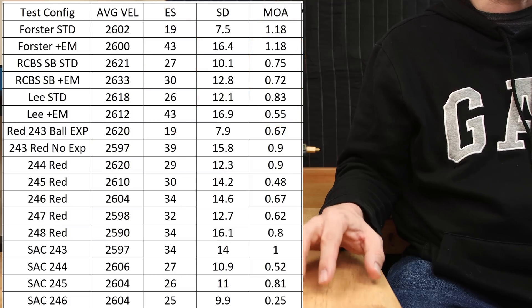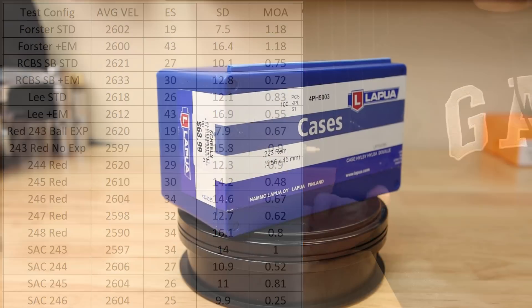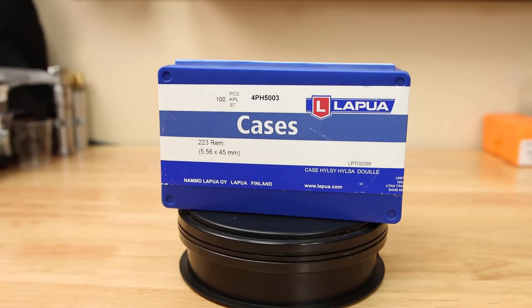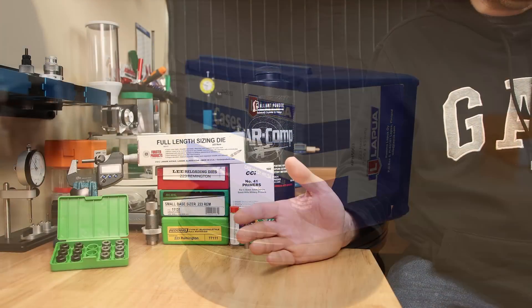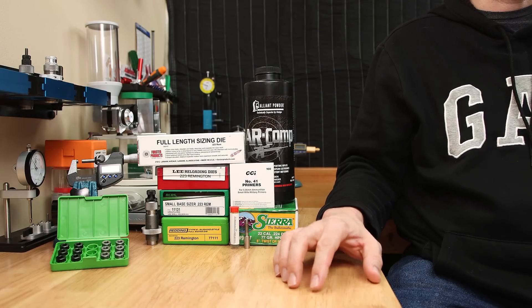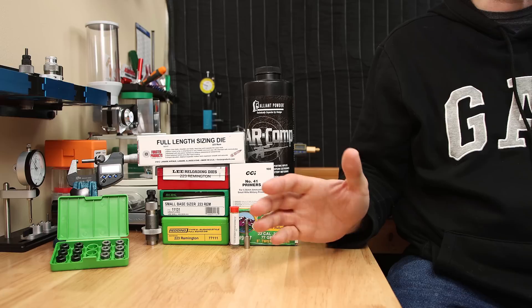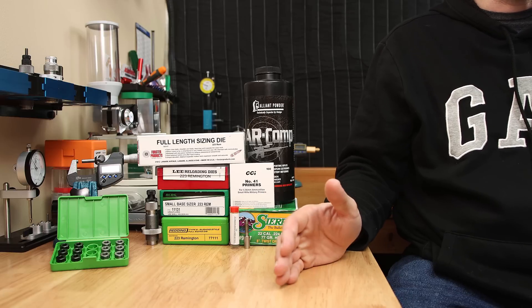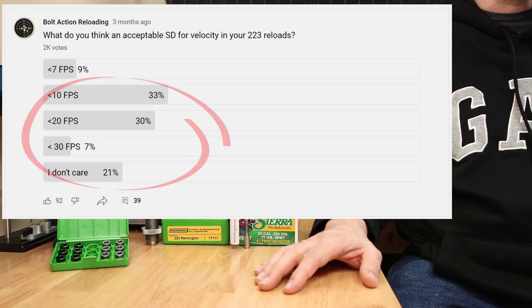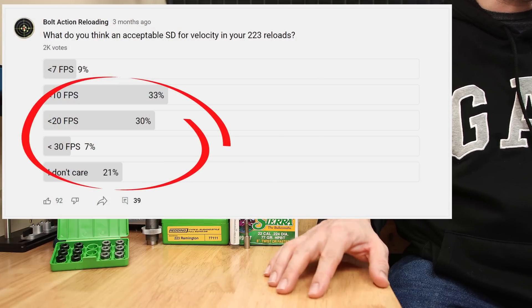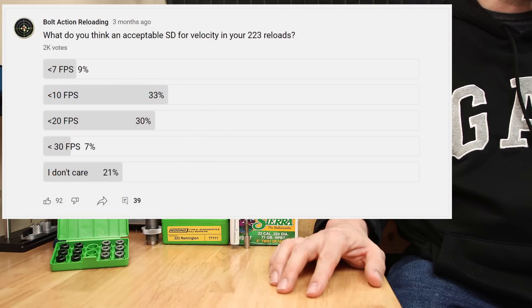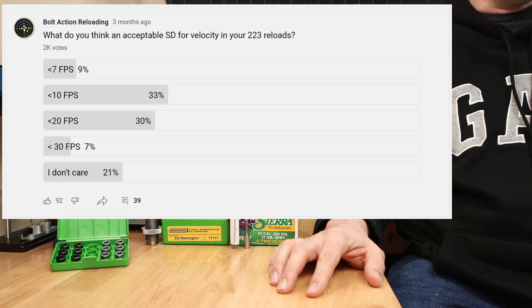If we were using a premium brass, I think we would have had better results, but I don't think a ton of guys are feeding Lapua brass through this style of platform. Maybe I'm wrong. After seeing the performance of the standard deviation and extreme spread of the factory offerings, I've asked you guys what your expectations were for .223 Remington, and the greater majority of you said we're happy with a standard deviation of less than 10 feet per second. Clearly, some of the combinations we tested today meet this criteria.